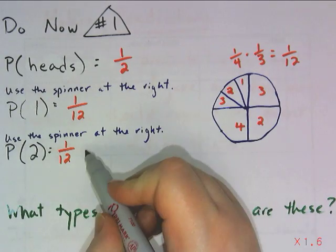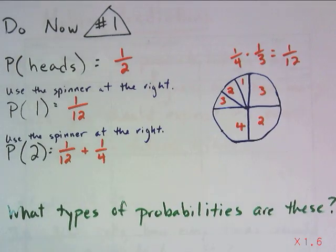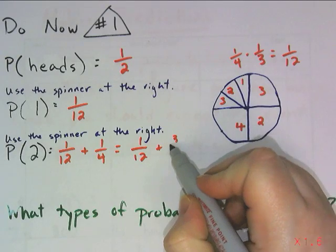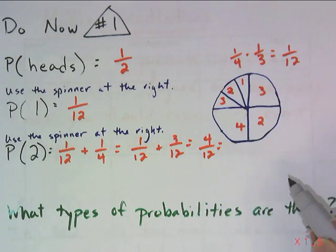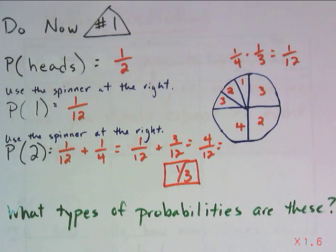But this section over here is one-fourth. So I can land in one-twelfth or I can land in the one-fourth. That means I need to add those together. So let's get some common denominators: one-twelfth plus three-twelfths, which gives me four-twelfths, which is equal to one-third.